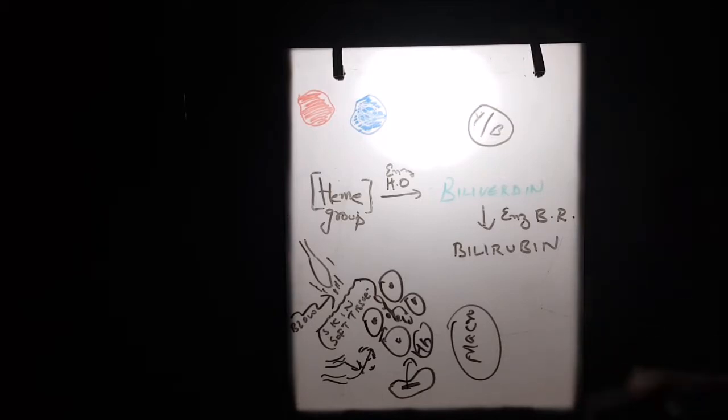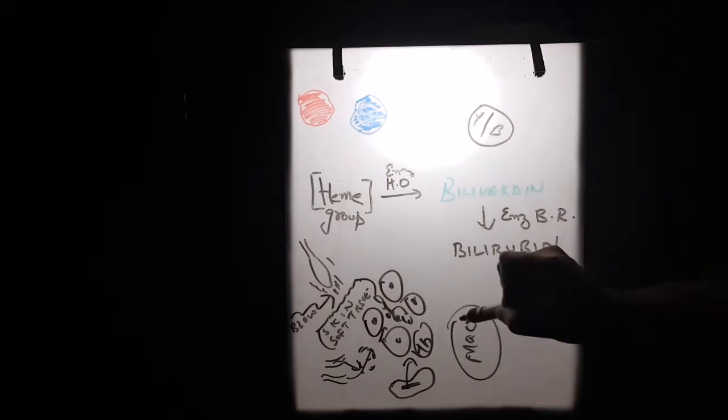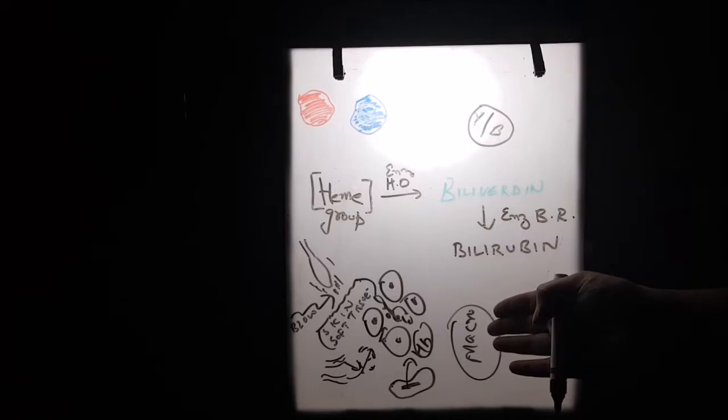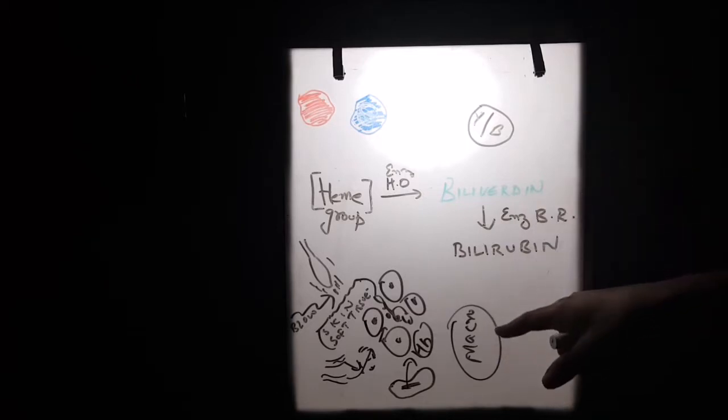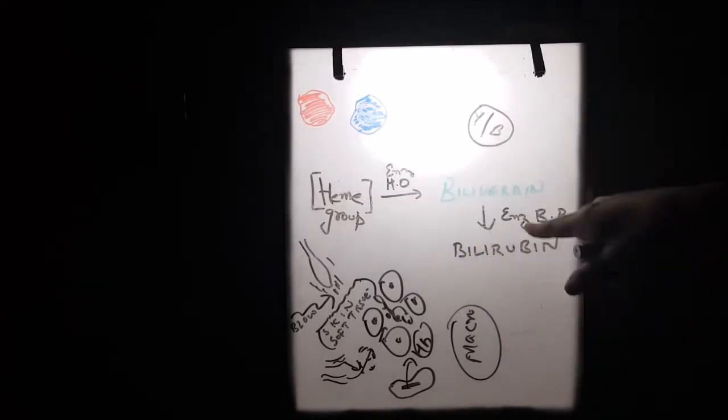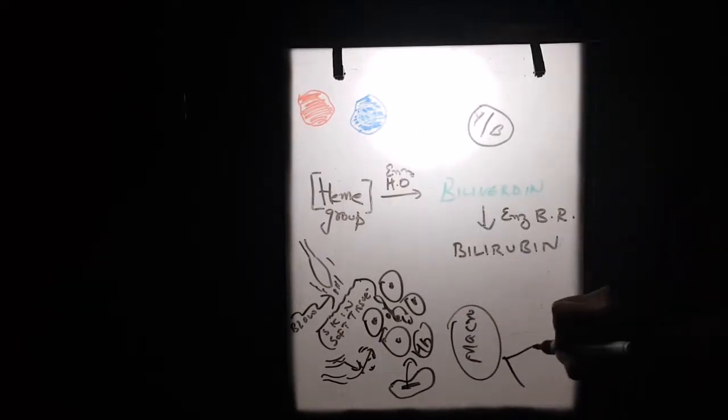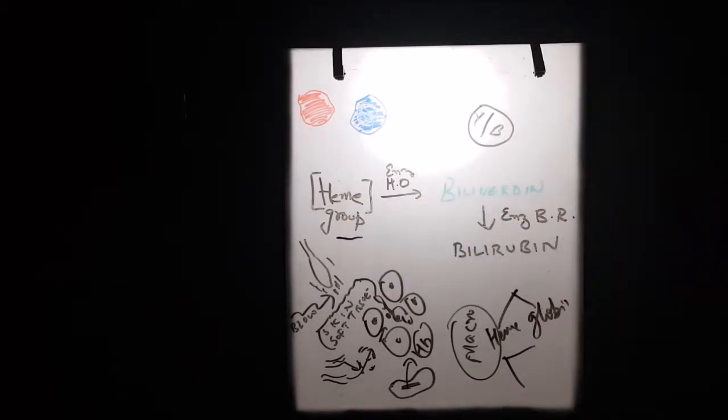We all know hemoglobin is usually metabolized by macrophages in the spleen; it takes the same similar cycle. Hemoglobin has two parts: the heme group and the protein part, globin. Let us come to the cycle.